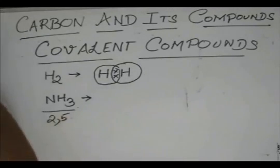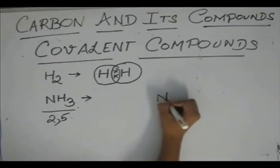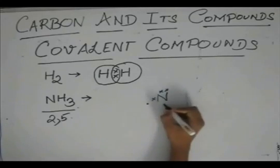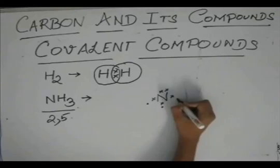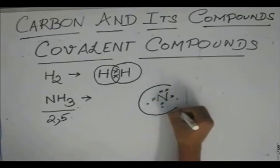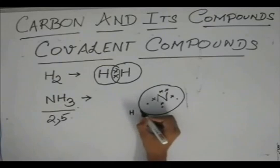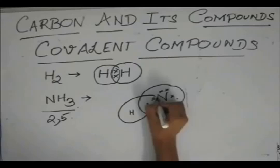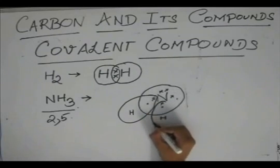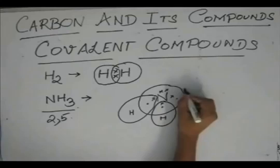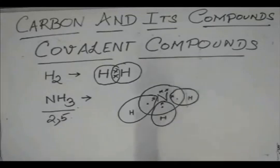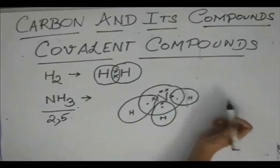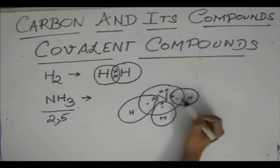So, you represent the structure of NH3 like H2. In a manner somewhat like this. Hydrogen has two electrons. Each hydrogen has two electrons and nitrogen has total eight electrons.